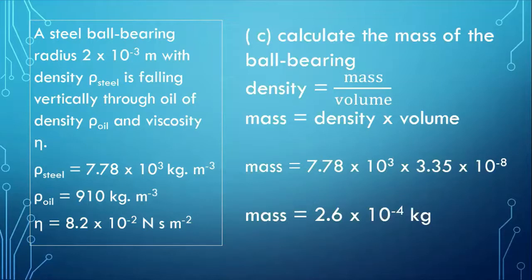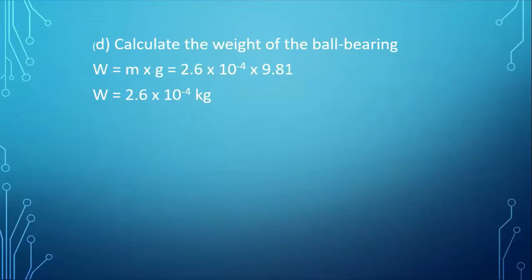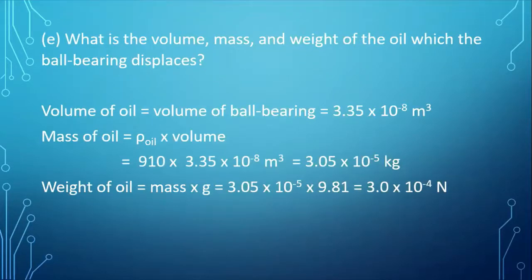On the left hand side, I'm just repeating the information should you need to refer to it. We're asked to calculate the mass of the ball bearing. Well, density is mass over volume. Mass is density times volume. So we can find the mass of the ball bearing. A piece of cake, certainly. Now we're asked to calculate the weight of the ball bearing. Well, w equals m times g. And w is 2.6 times 10 to the minus 4 kilograms. Now, what then is the volume, mass and weight of the oil which the ball bearing displaces? The volume of the oil is the same as the volume of the ball bearing. The mass of the oil. Mass is density times volume. So we've got the mass of the oil. The weight of the oil is its mass times g. So we've got the weight of the oil.